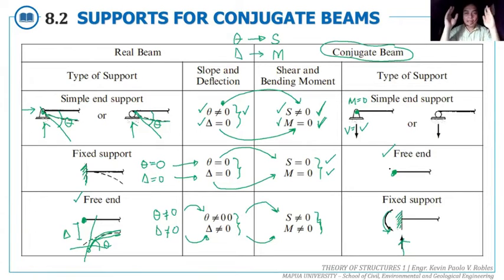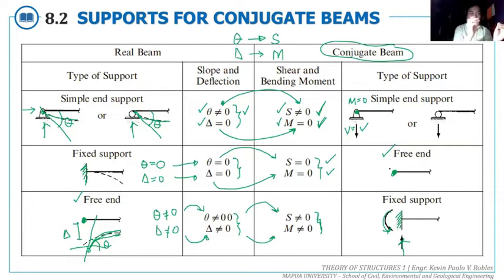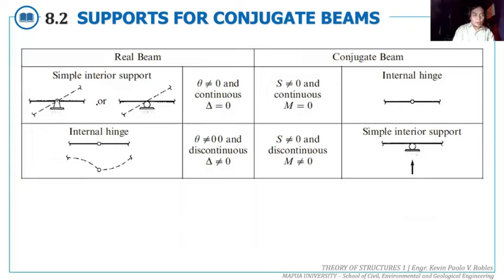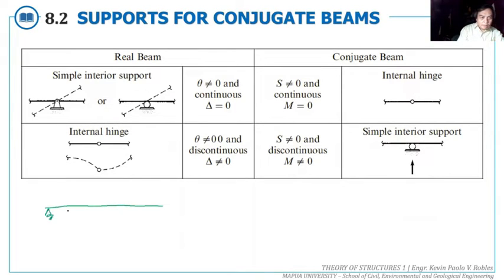Now let's consider an interior support — for example, in a continuous beam with two spans, the middle support is an interior support. When the beam deflects, the tangent line at the interior support is not horizontal, so theta is not zero. Also, since this is an interior support, the deflection there is equal to zero.